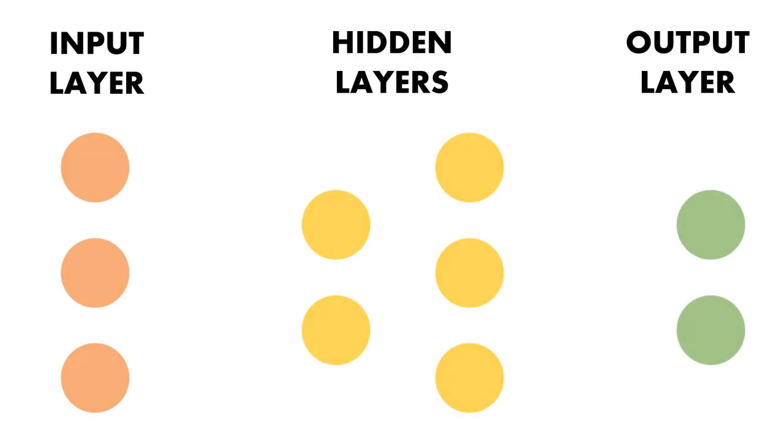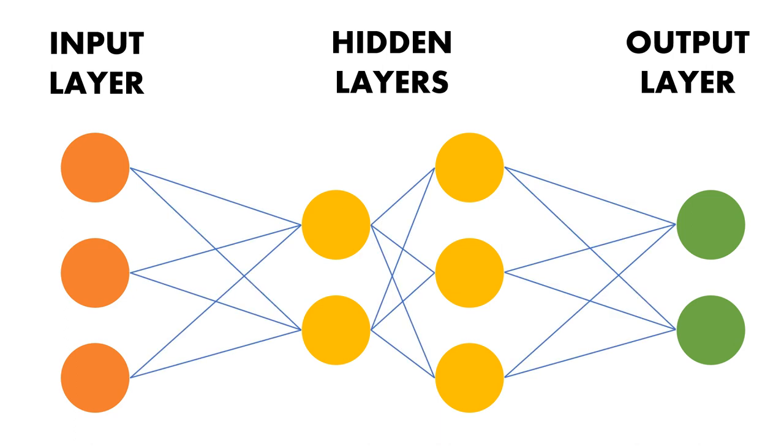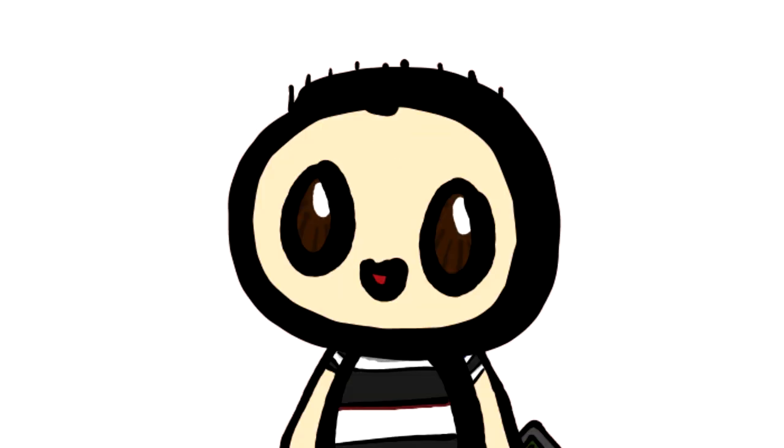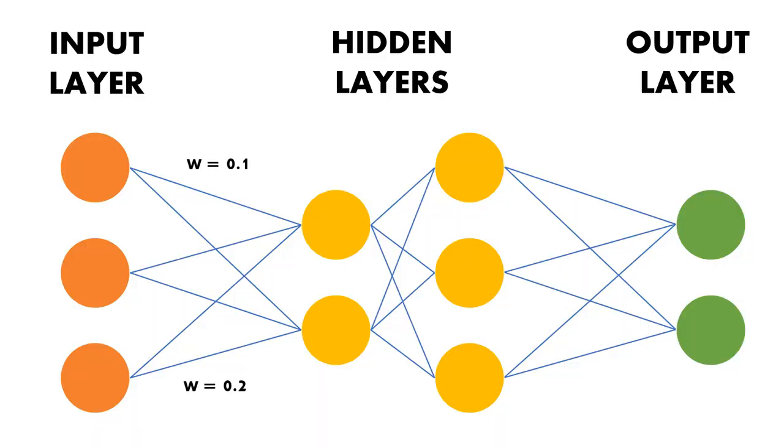Every layer has these nodes called neurons. And every neuron is connected to the neurons of the next layer. I know, complicated. But each of these connections has a weight to them, which is what determines which connection is chosen.